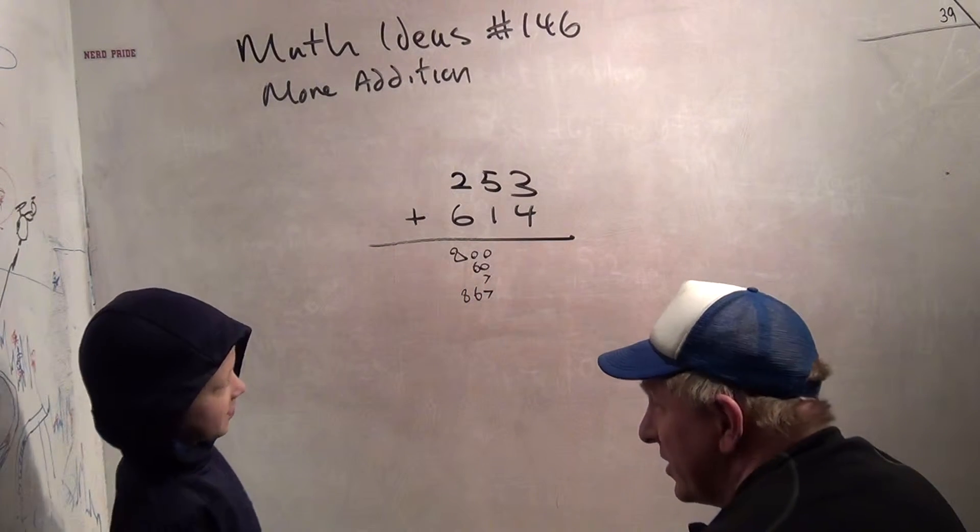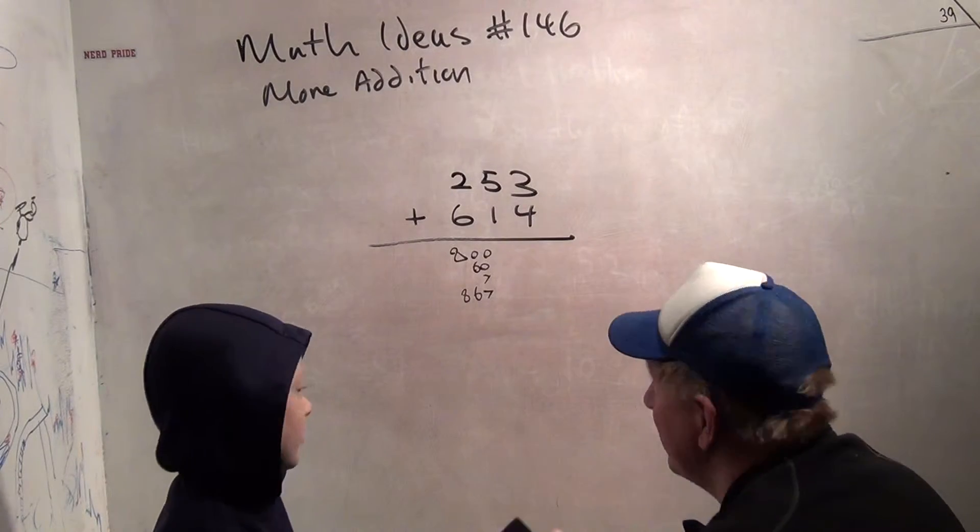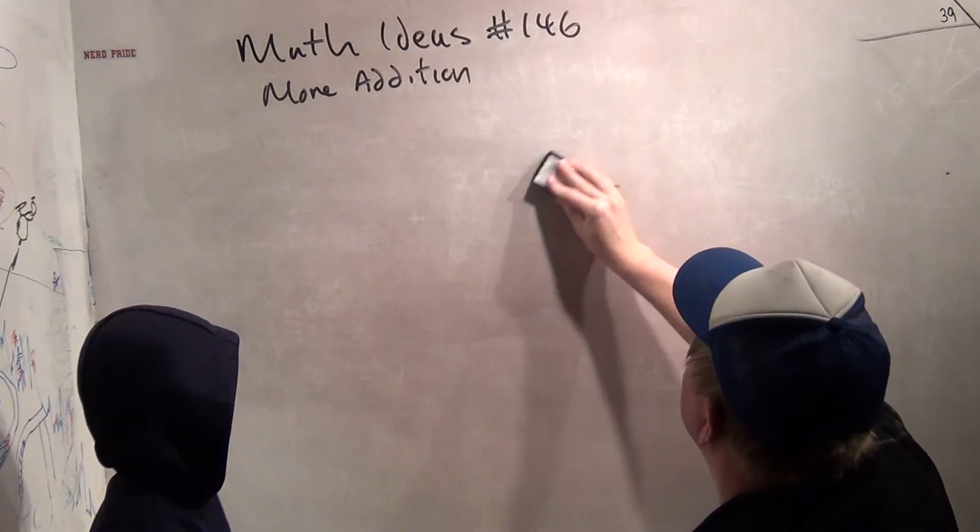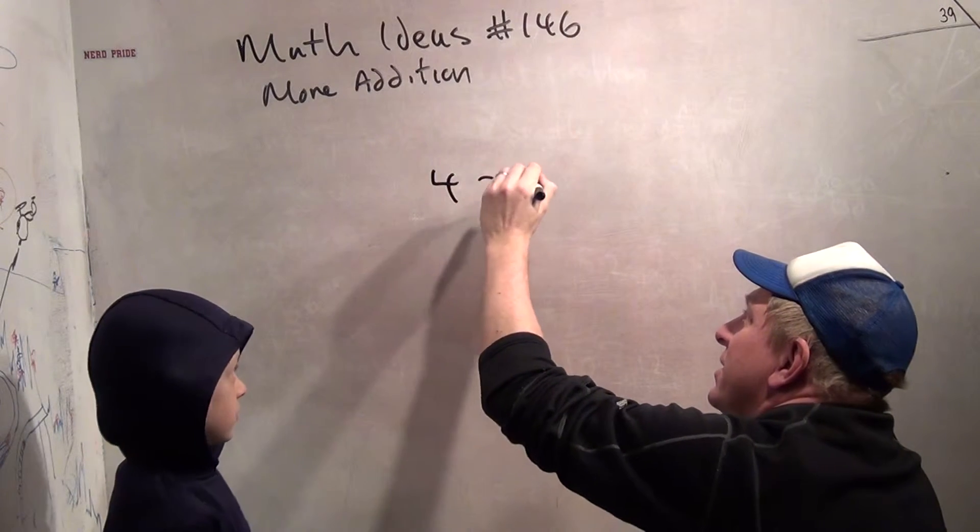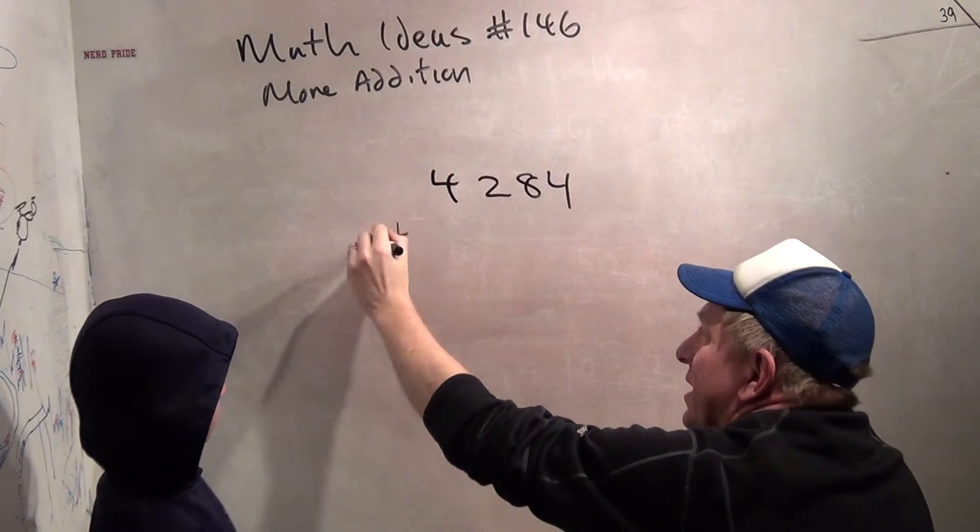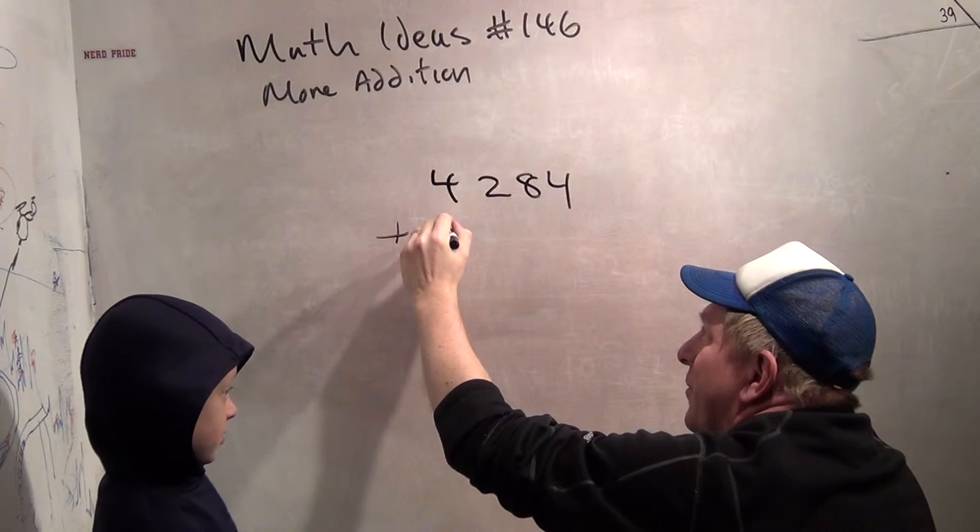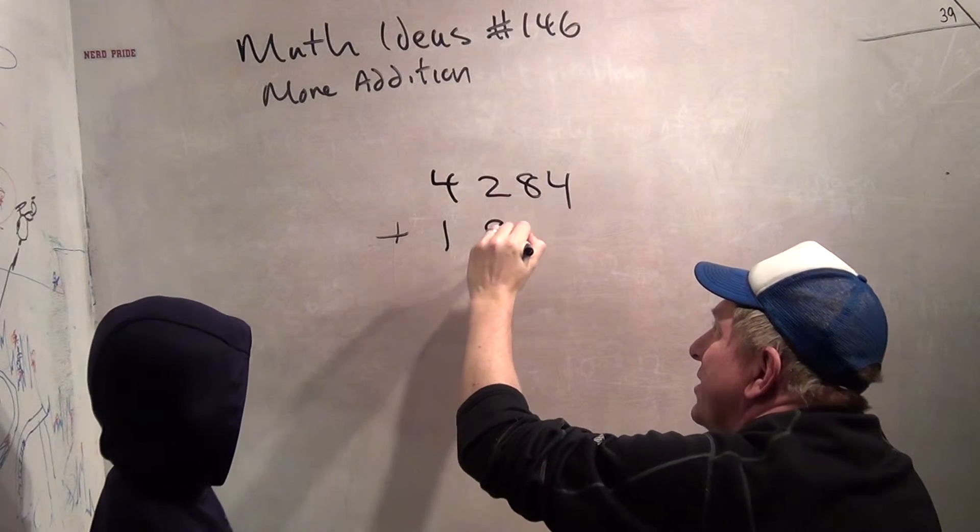Okay, now you want the super trickiest one of all tricky ones of all time? Here we go. So 4,284 plus 1,942.